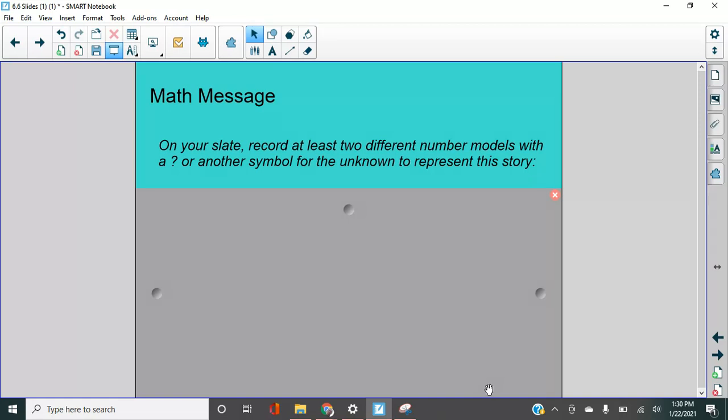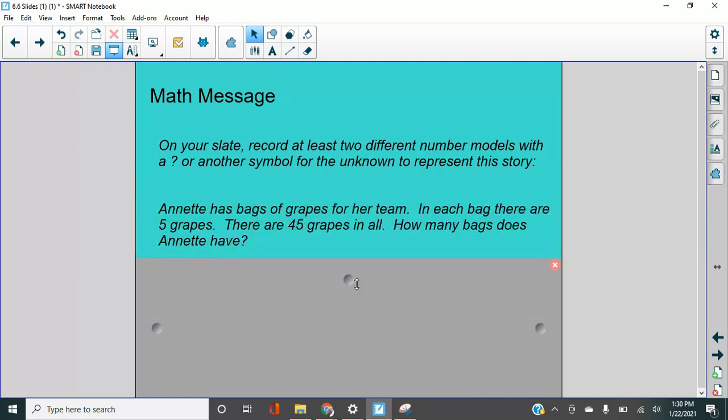Here is our math message. It says on your slate, right? So this is in a notebook or on a dry erase board, record at least two different number models with a question mark or another symbol for the unknown. So something's going to be unknown here to represent this story. So take a moment and read through this. And I want you to think about an equation that we could write to represent this.